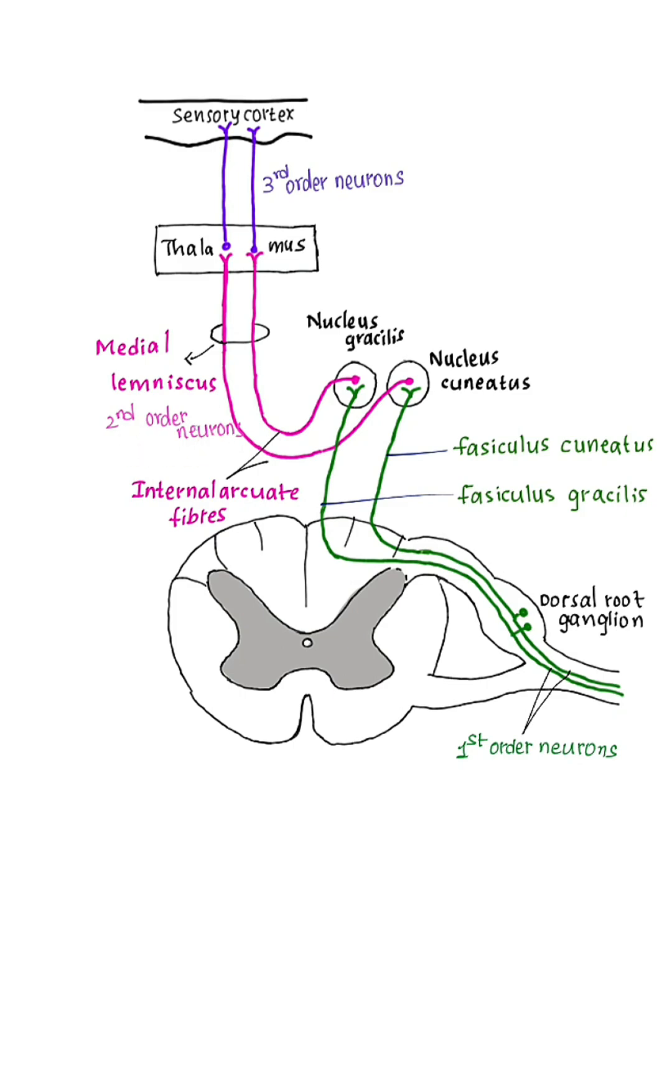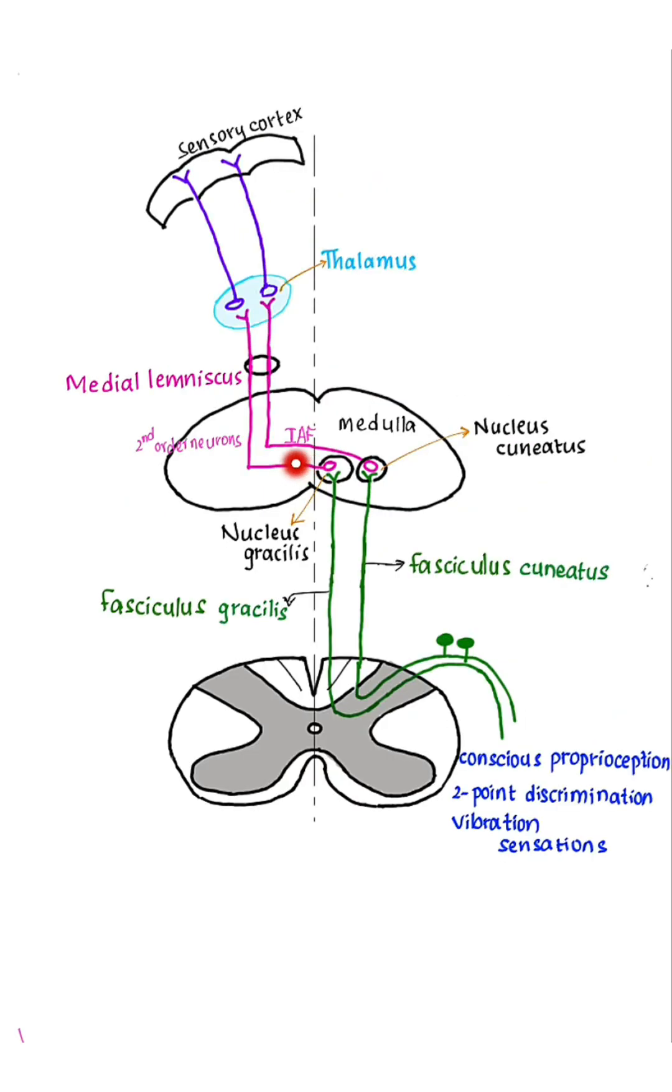Second-order neurons: Their cell bodies are present in Nucleus gracilis and Nucleus cuneatus present within the medulla. The axons of second-order neurons form internal arcuate fibers.